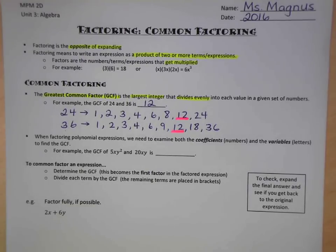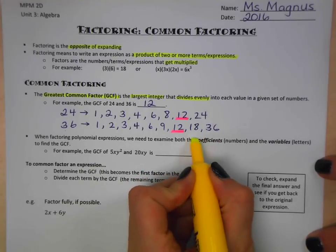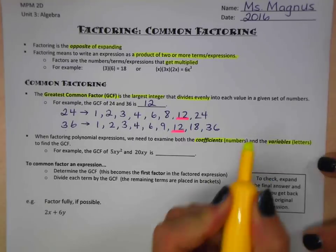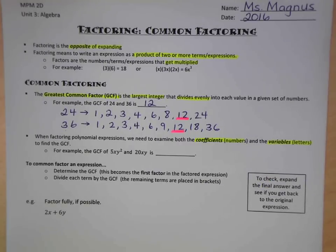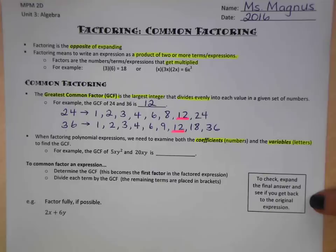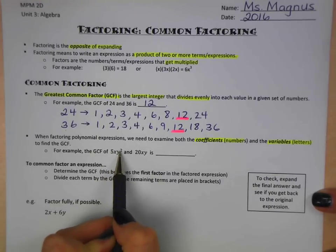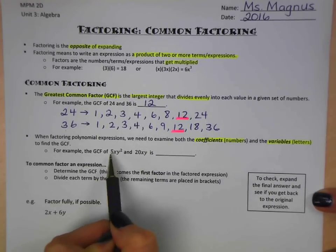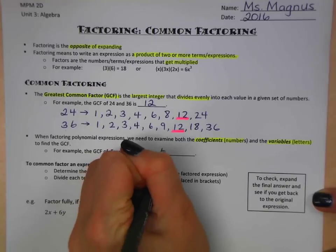We're going to use this process, but now we are looking at it in a more complicated way because we're looking at coefficients, the numbers, and the variables. So again, we're looking for things that get multiplied together to give us our number. For example, we have 5xy squared and 20xy.